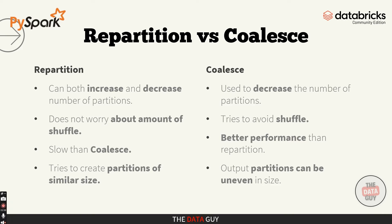So what's the difference between repartition and coalesce? Repartition can both increase or decrease the number of partitions, whereas coalesce is only used to decrease partitions. Repartition does not worry about the amount of shuffle, while coalesce tries to avoid shuffle. Repartition is slower than coalesce. Repartition tries to create partitions of similar size, whereas with coalesce the output partitions can be uneven in size.